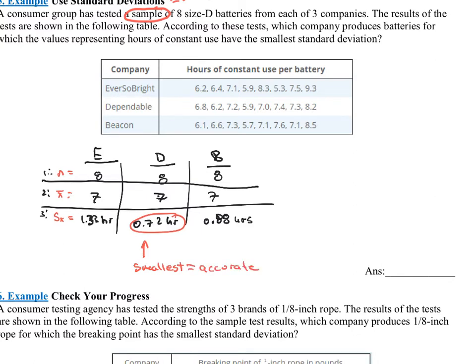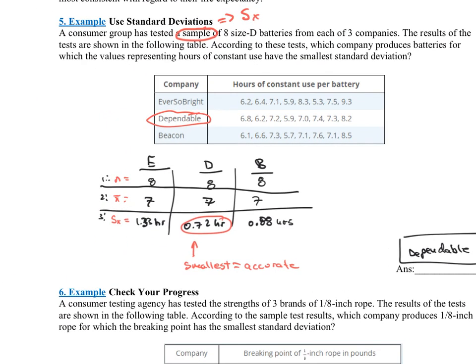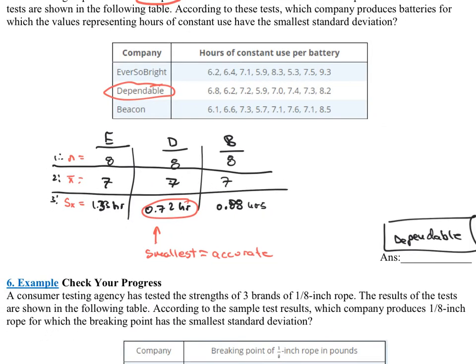Okay, smallest in this case means the more accurate. So which battery company am I choosing? I'm going to be choosing dependable. Nice name. Dependable batteries. Okay, so every single one of these is on the same playing field when it comes to the average length of the batteries. If one of their batteries' average length was 10, that's probably the one I'd go with. But since all the averages are the same, I'm going to look for accuracy, the smallest standard deviation.